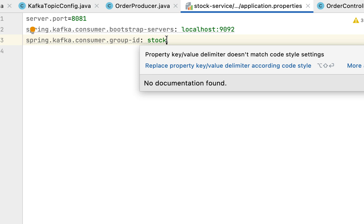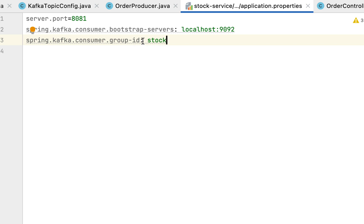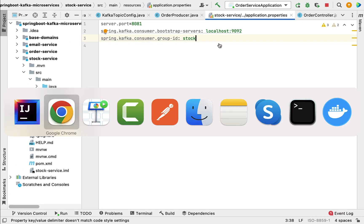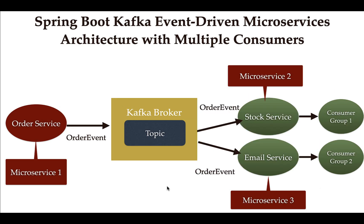This group-id is very important. If there are multiple consumers consuming messages or events from a single topic, the group-id plays a very important role. For example, in our architecture we have two consumers — stock service and email service — both consuming from the same topic. When multiple consumers consume from a single topic, you must assign a different group ID to each consumer, not the same group.